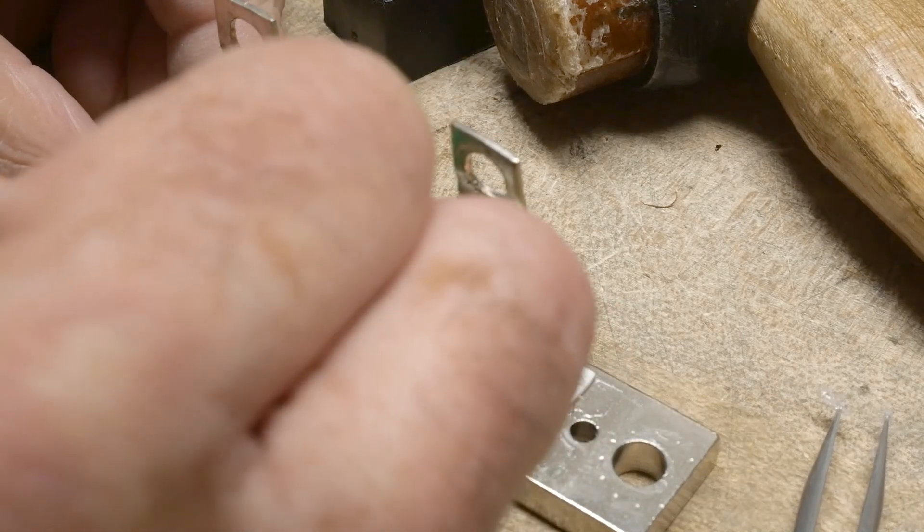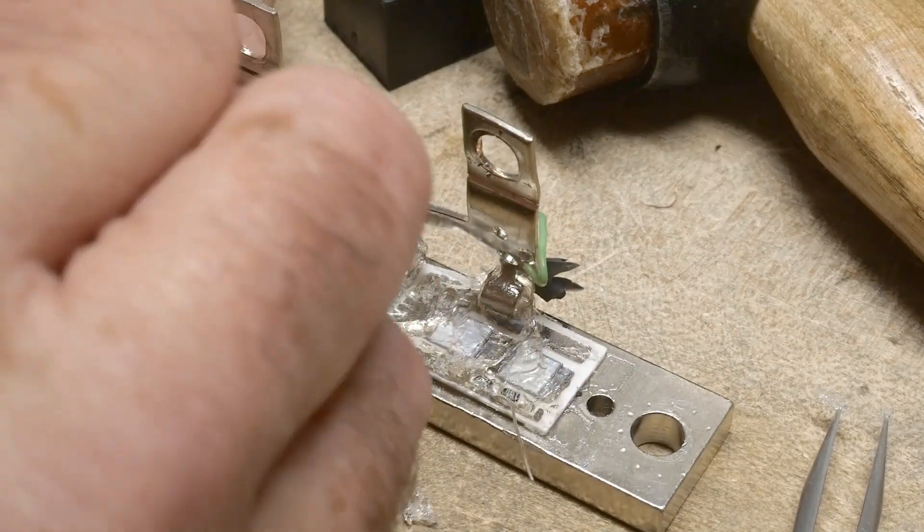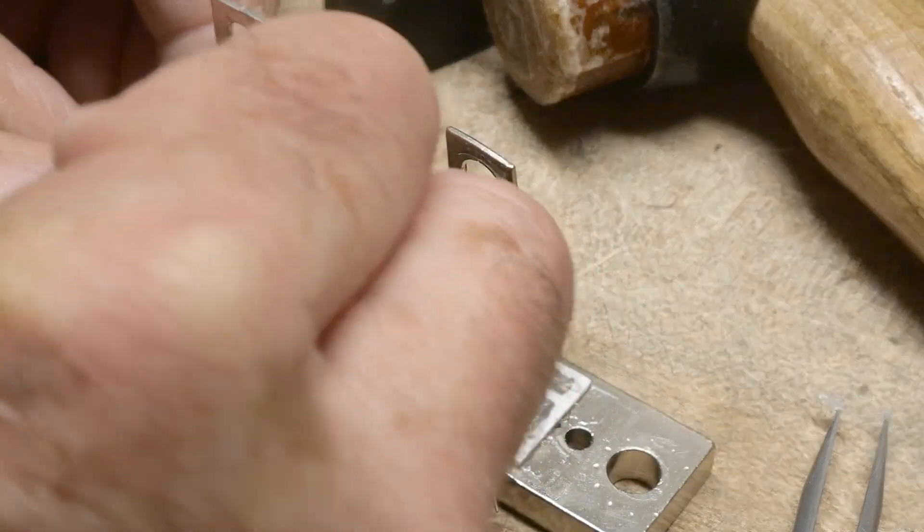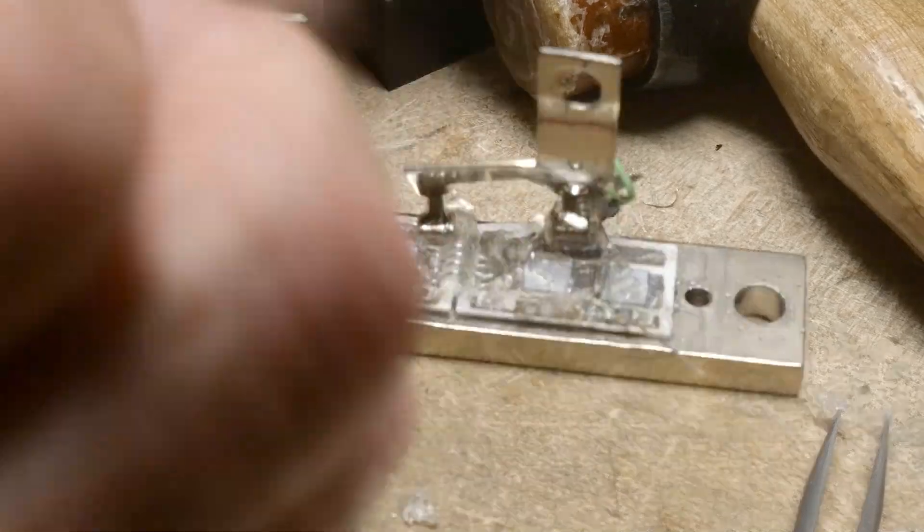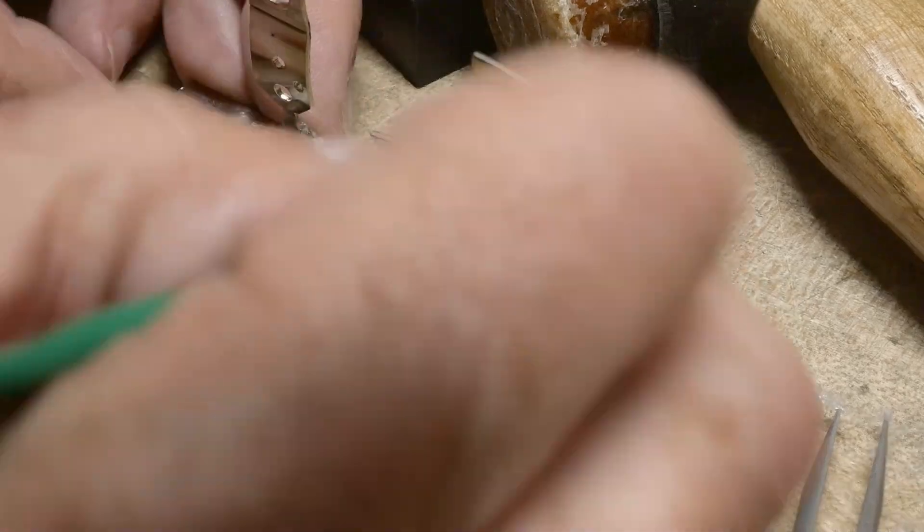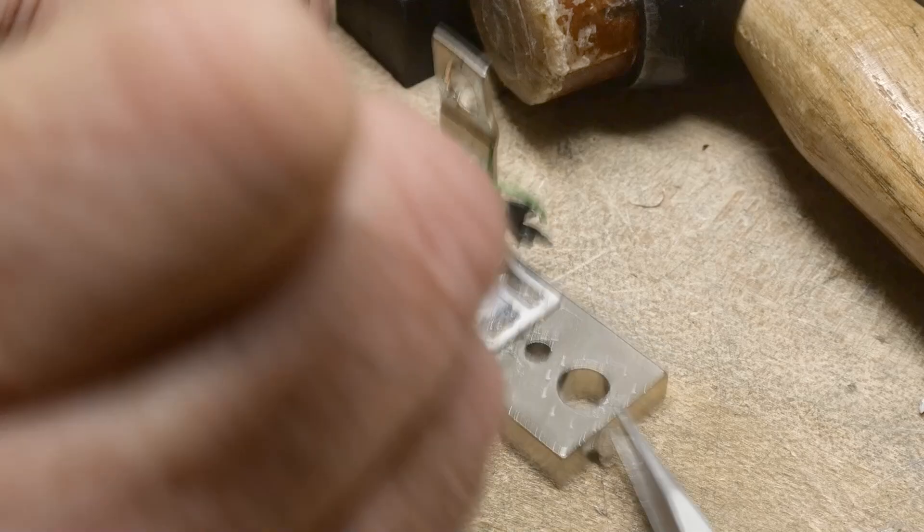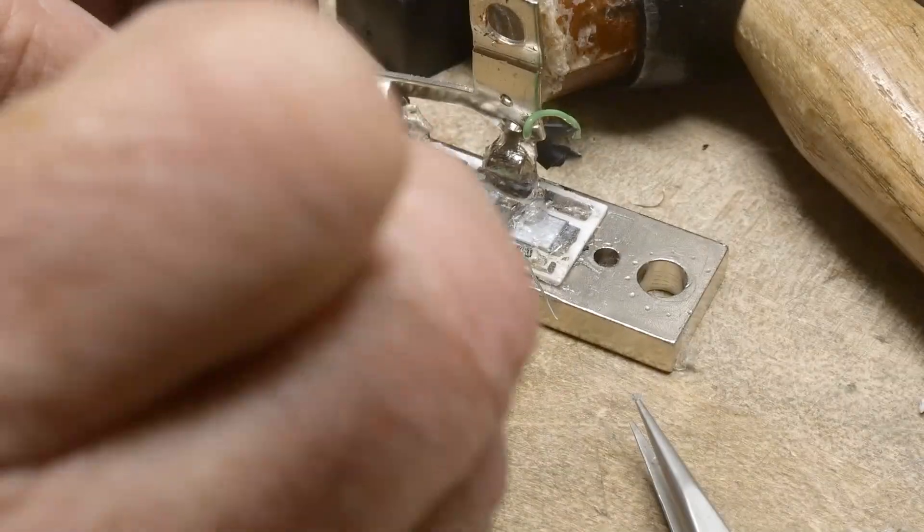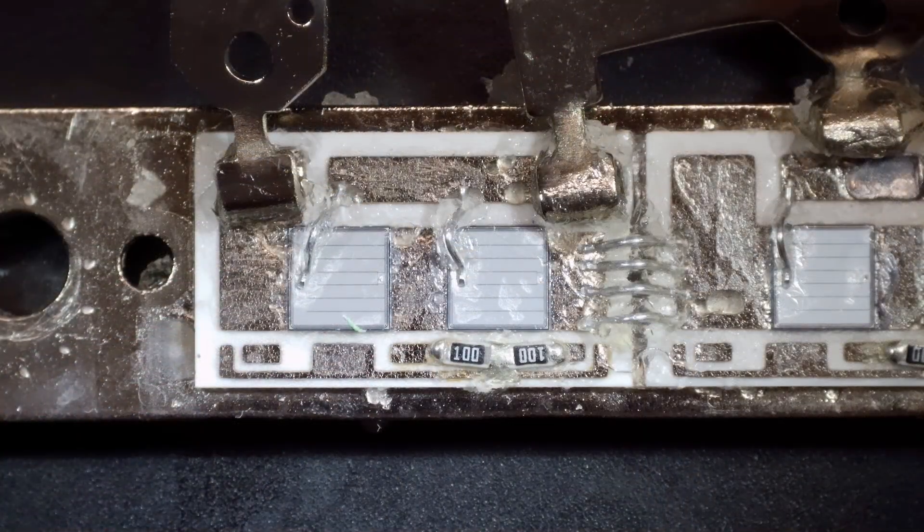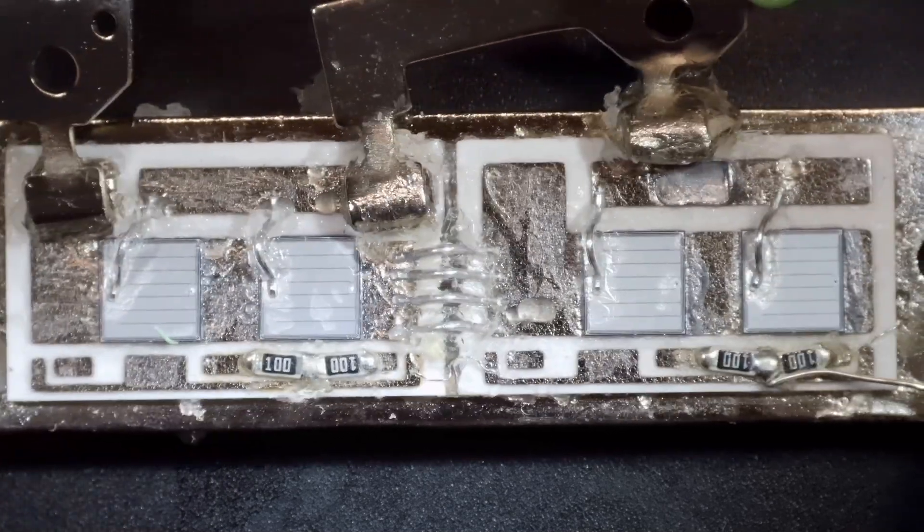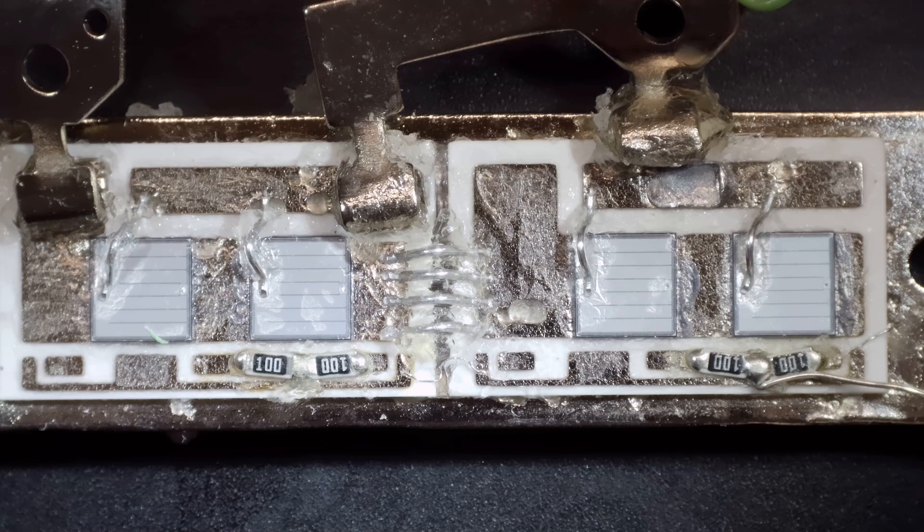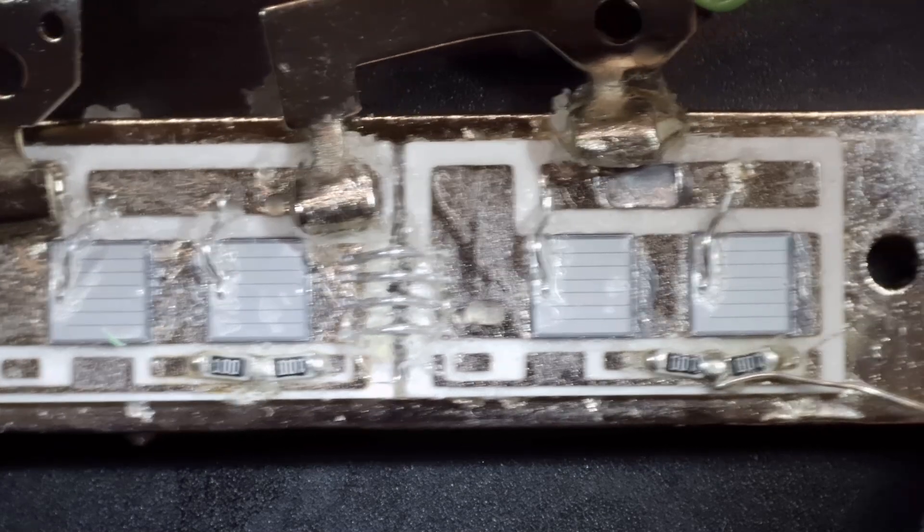I'm going to try to use this plastic spudger tool here to scrape some of that off. Well, it cleaned up reasonably well. There's still a whole bunch left behind—it's super hard to get, it's stuck in between the bond wires and everything—but we get a good clear view of what's going on here now.